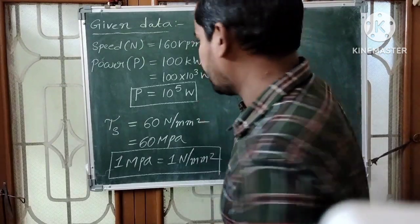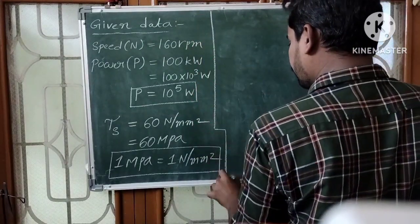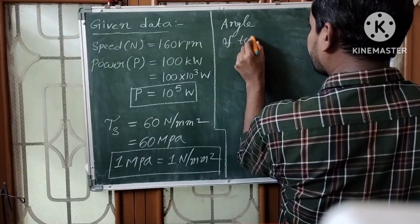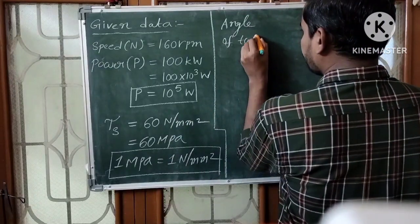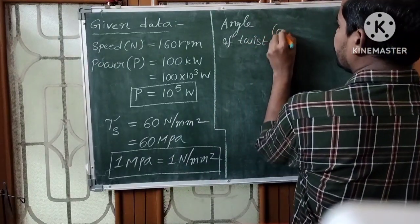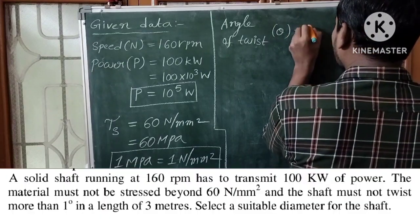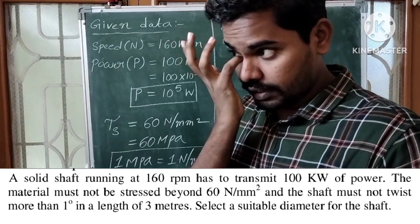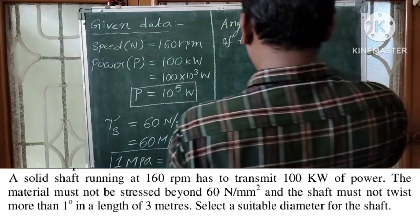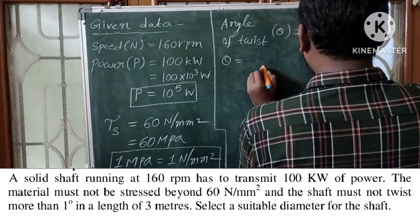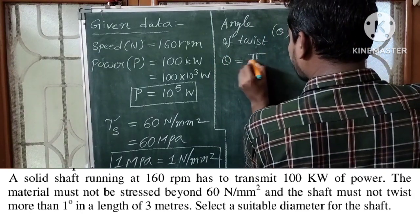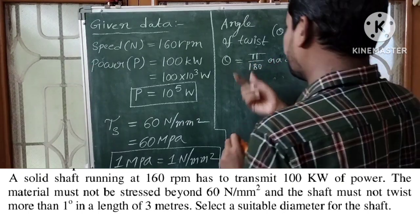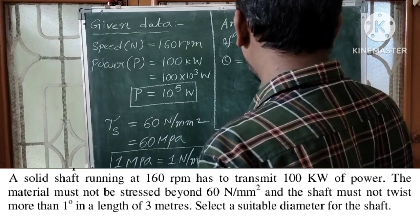Next, the maximum angle of twist theta is given as 1 degree. We must convert this to radians. Theta is equal to 1 degree, which equals pi by 180 radians. This conversion from degrees to radians is very important.